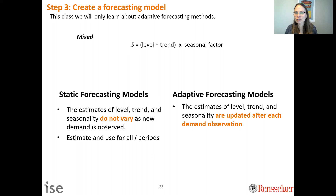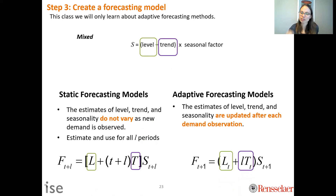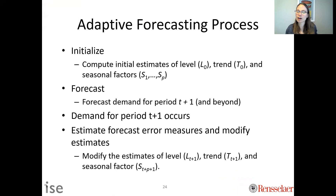In this class, we're only going to study adaptive forecasting methods, in contrast to static forecasting models. In adaptive methods, the estimates for systematic components are a function of T — meaning every time we observe a demand point, we update our estimates of level, trend, and seasonality. Static models just have a fixed L with no T. We build a model, observe demand, and then update and improve the model.